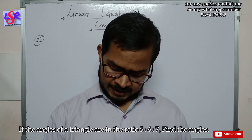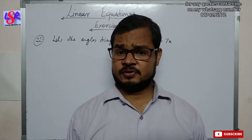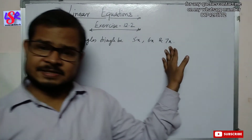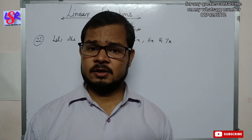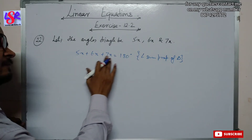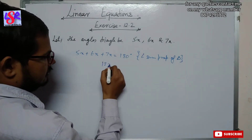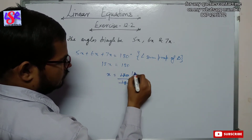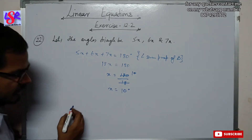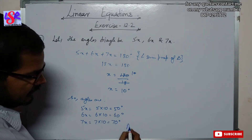Now let us move to question number 22. The angles of a triangle are in the ratio 5:6:7. Let the angles be 5x, 6x, and 7x. Since the sum of all angles of a triangle is 180 degrees: 5x + 6x + 7x = 180, so 18x = 180, giving x = 10 degrees. Therefore the angles are 5x = 50°, 6x = 60°, and 7x = 70°.